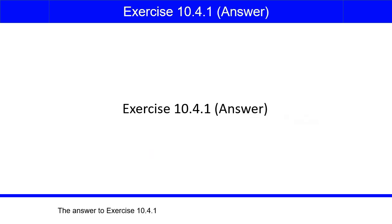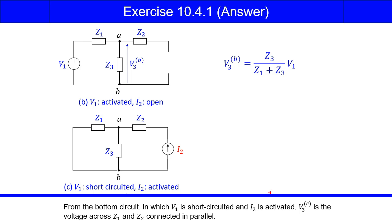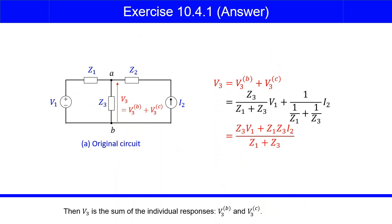The answer to exercise 10.4.1: From the top circuit, in which V1 is activated and I2 is opened, V3B is obtained as shown in this equation. From the bottom circuit, in which V1 is short-circuited and I2 is activated, V3C is the voltage across Z1 and Z2 connected in parallel. Then V3 is the sum of the individual responses V3B and V3C.